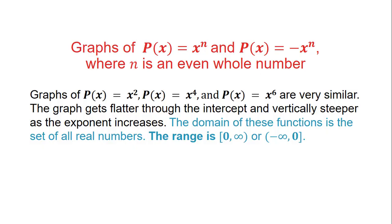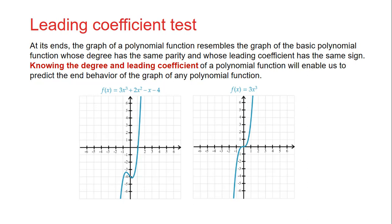In summary, for p of x equals x to the n and p of x equals negative x to the n where n is an even whole number, the graphs get flatter through the intercept at (0,0) and vertically steeper as the exponent increases. The domain is all real numbers and the range will be either negative infinity to 0 or 0 to infinity. At its ends, the graph of a polynomial function resembles the basic power function with the same degree parity and same sign of leading coefficient.